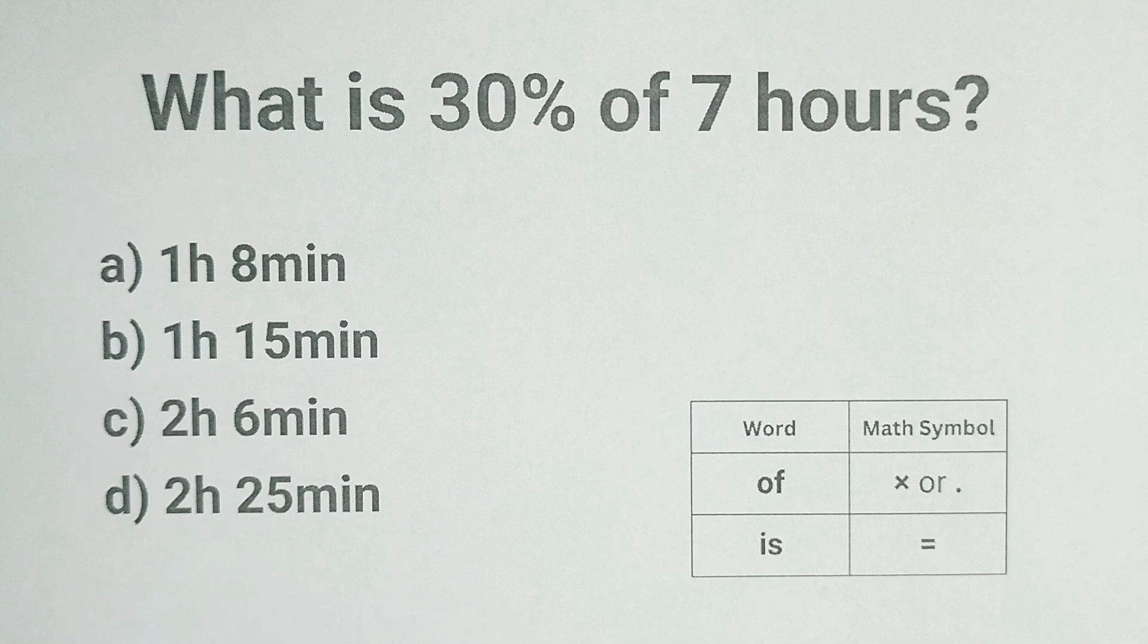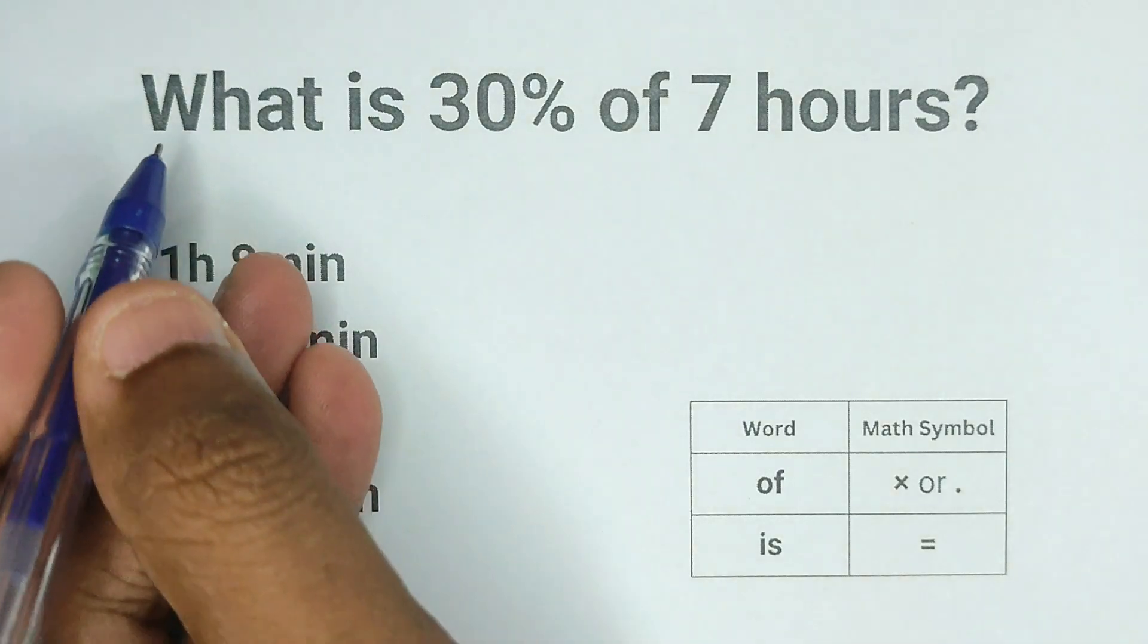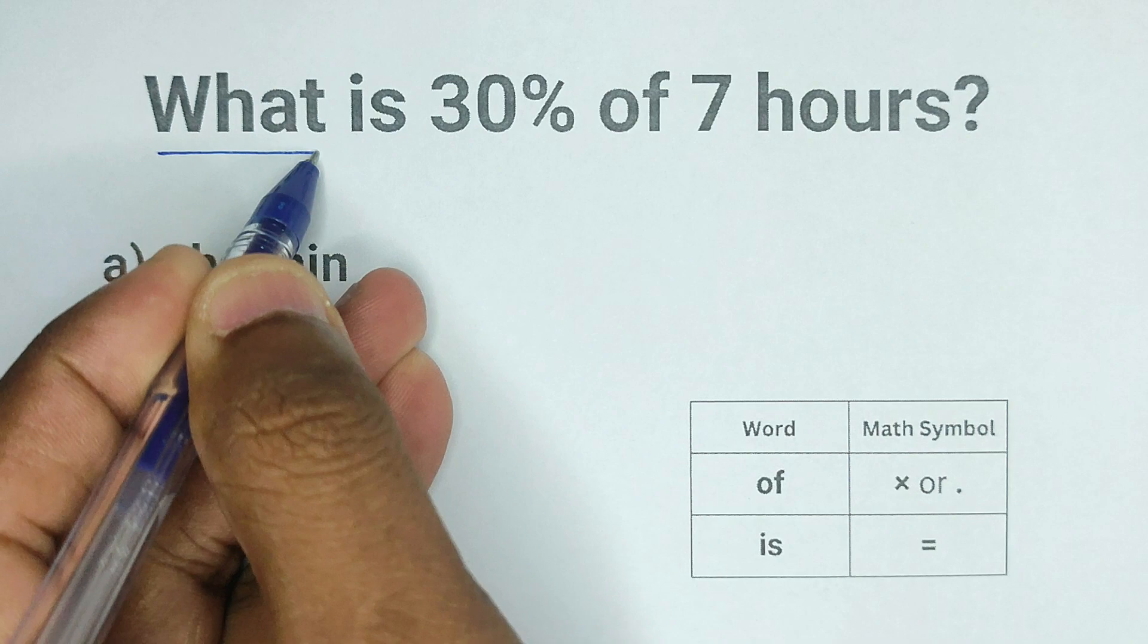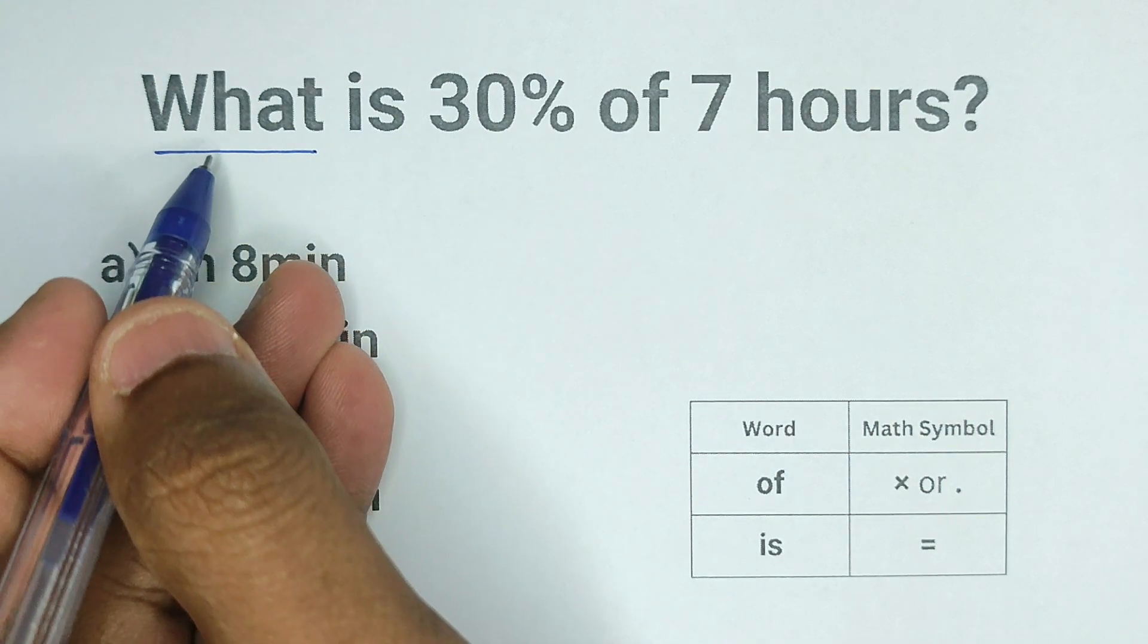In order to solve any math word problem, you need to rewrite the word problem using only math symbols. So that's what I'm going to do right now. I'm going to start from the left and go to the right. The first word of this word problem is 'what'.